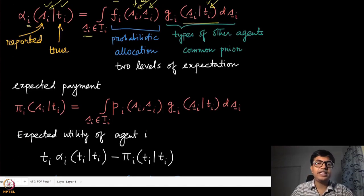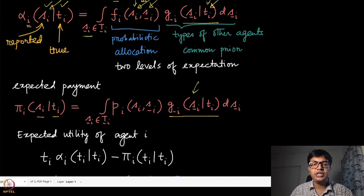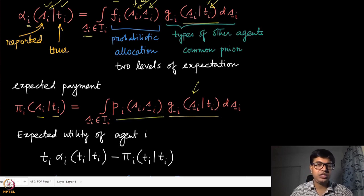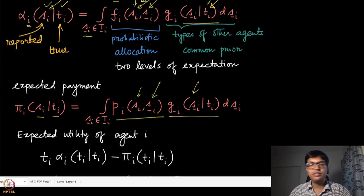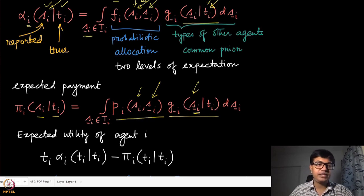Similarly, we define the expected payment for player i, where s_i is the reported type and t_i is the true type. We take the expectation with respect to the posterior distribution given the agent's own type, generating a belief over the types of other agents, and taking the expectation over the actual payment decided by the mechanism. The other players are assumed to be reporting truthfully in the probability expression.